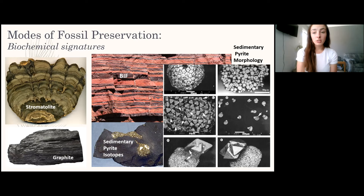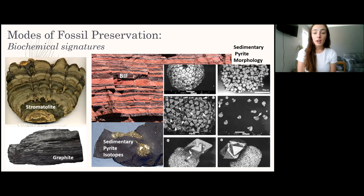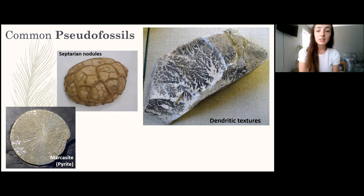Pyrite morphology — its size and structure — can also indicate whether life was involved in its formation. There are plenty more biochemical signatures in the rock record that can indicate whether life was involved in a process; these are just some examples.